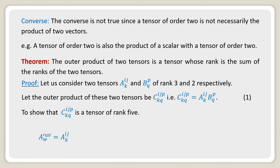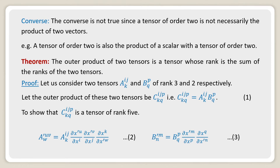Now, A'^uvw = A^ij_k (∂X'^u / ∂X^i)(∂X'^v / ∂X^j)(∂X^k / ∂X'^w). Say this is equation number 2. And again, B'^mn = B^p_q (∂X'^m / ∂X^p)(∂X^q / ∂X'^n). Say this is equation number 3.